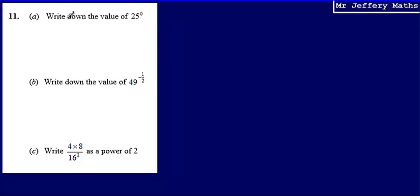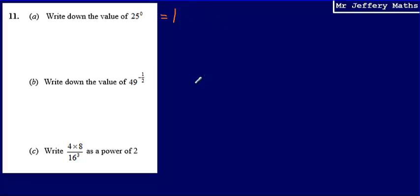This is question 11. Here we're asked to write down the value of 25 to the power of 0. This is a nice easy one because what we can say is that any quantity raised to the power of 0 will be equal to 1. So 11a will be equal to 1.